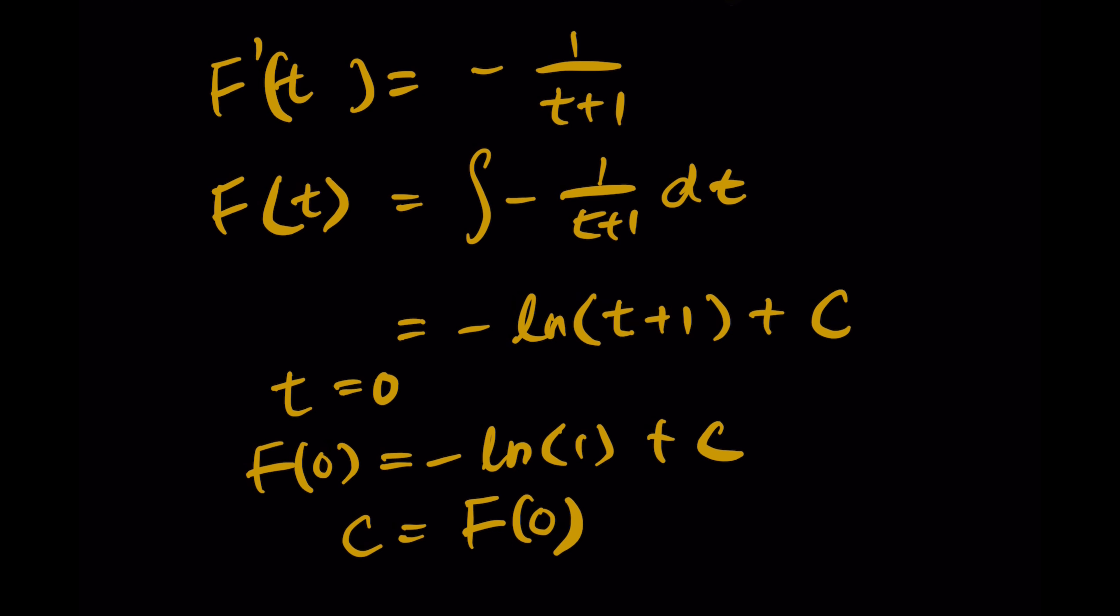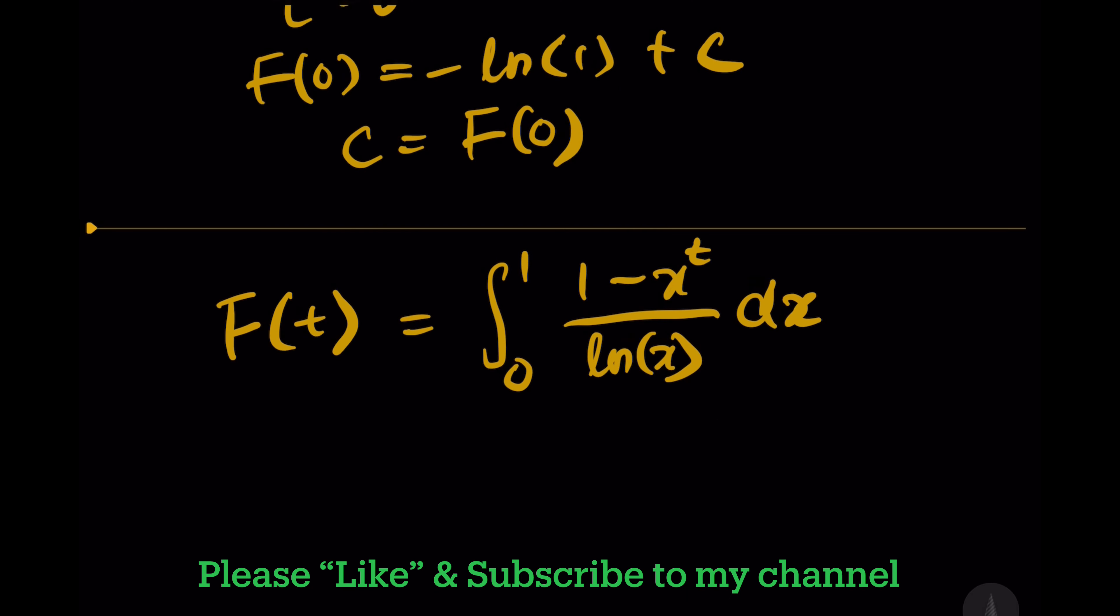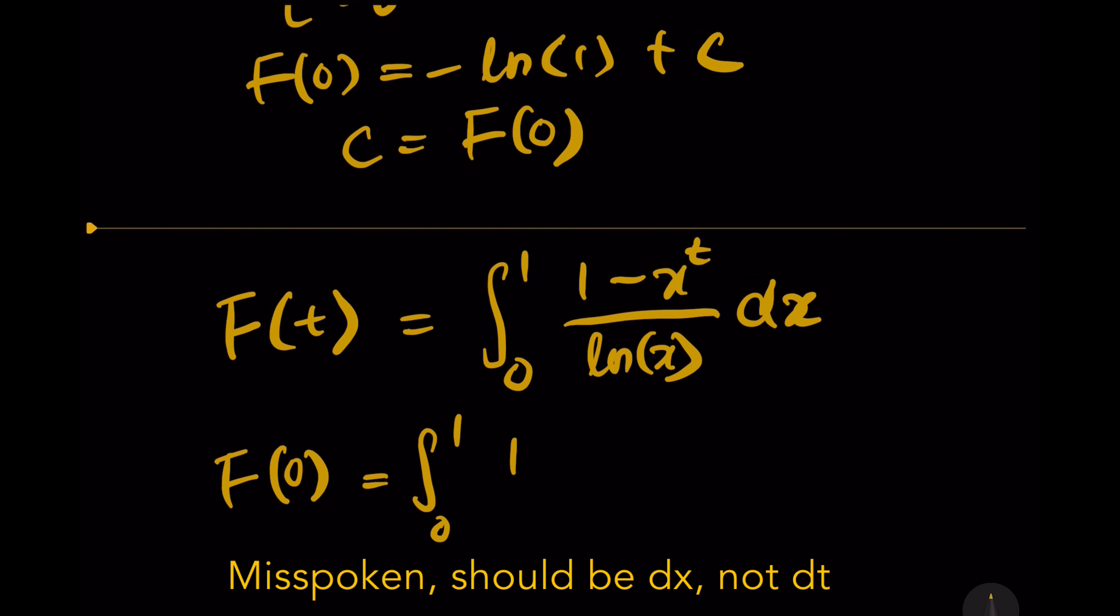So how do we get F(0)? To get the constant c equal to F(0), let's go back to the original function F(t) that we defined. By putting F(0) here, we are getting the integration from 0 to 1 of (1 minus x^0) over ln(x) dx.